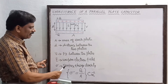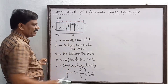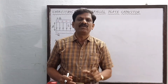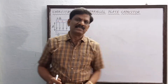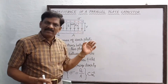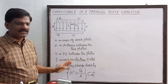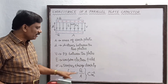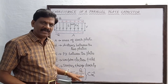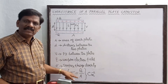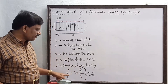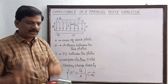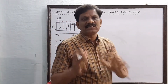σ (sigma) is the surface charge density — it is the ratio of the charges appearing on either plate divided by the area of each plate. So σ = q/A, where q is in coulombs and A is in meter squared, giving sigma the unit of coulombs per meter squared. Now we start the derivation.